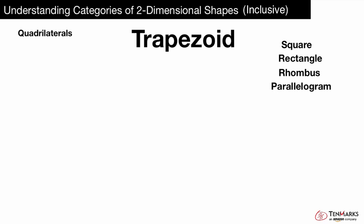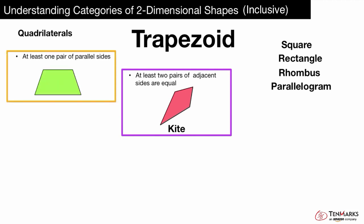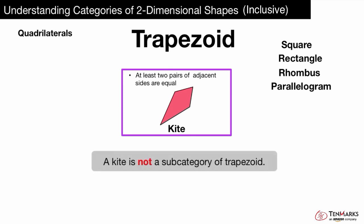Let's look at a kite. Is it a special type or subcategory of trapezoid? A trapezoid, by definition, has at least one pair of parallel sides. Does a kite have at least one pair of parallel sides? No, a kite has at least two pairs of adjacent sides that are equal. You can see that it does not have at least one pair of parallel sides. So that means a kite is not a special type or subcategory of trapezoid.